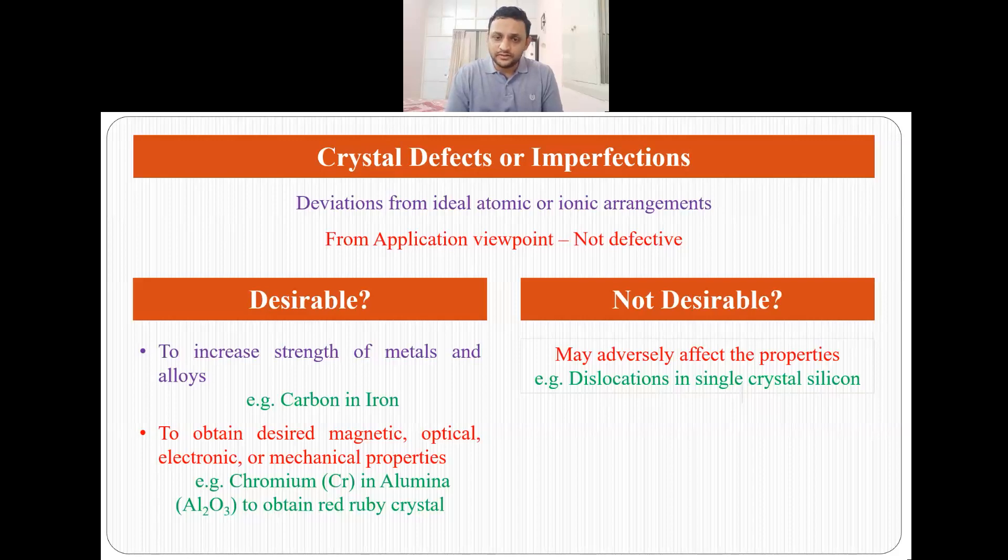But in many cases, these crystal defects or crystal imperfections are not desirable. For example, in single crystal silicon, the presence of dislocations, which are line defects, adversely affect the properties of the material, and we do not want any kind of defect present in this material. So crystal defects may be useful or not useful.